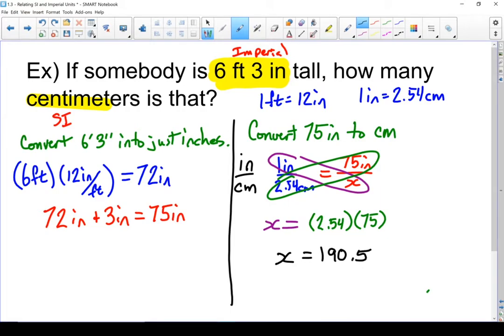Let's round that off to 191 because everyone always rounds their height up. And because our unknown was on the bottom and centimeters in the bottom this must be centimeters. A person who's six feet three inches tall is 191 centimeters.